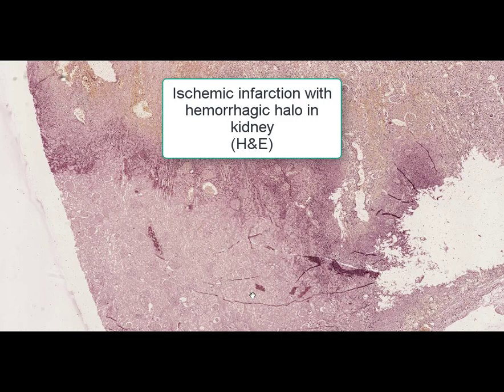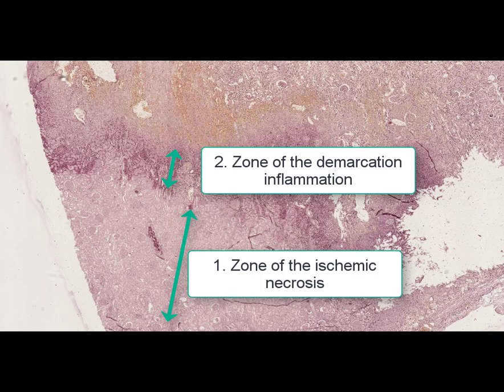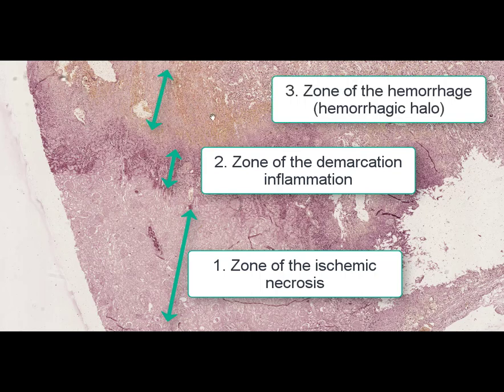On this slide we can see a histological section of the kidney. The stain is hematoxylin and eosin. The name of the slide is ischemic infarction with a hemorrhagic halo in the kidney. Infarction is a type of vascular necrosis, and there are three forms: ischemic (white) infarction, hemorrhagic (red) infarction, and ischemic infarction with a hemorrhagic halo, which is presented here. At low magnification, three zones of infarction can be identified: the zone of ischemic necrosis, the zone of demarcation inflammation, and the zone of hemorrhages.